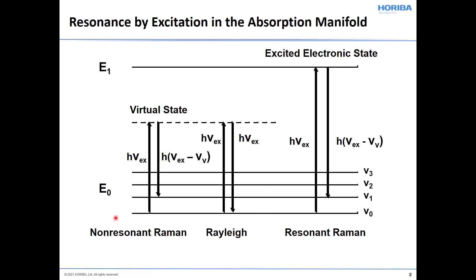What you see here are the ground and first excited electronic states, E sub zero and E sub one respectively. Within each electronic state, you have a manifold of vibrational states, and for the ground electronic state that is shown here as nu sub zero, nu sub one, nu sub two, nu sub three, etc.